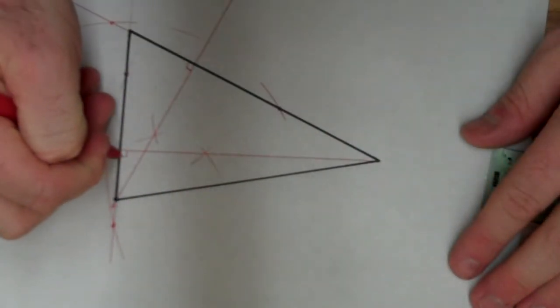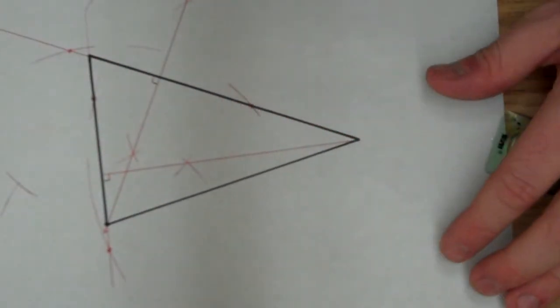There we go. So now what I know is that this is perpendicular right here. And so this is also an altitude.